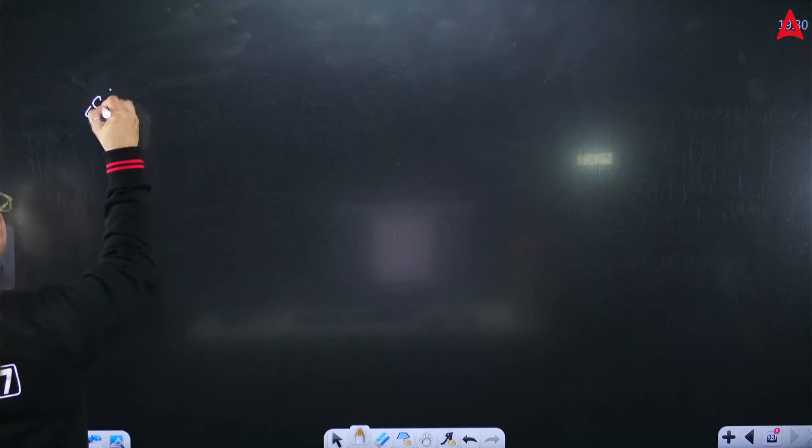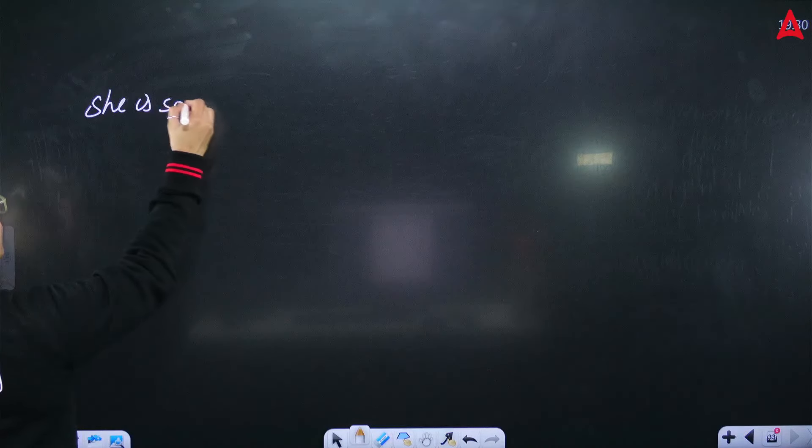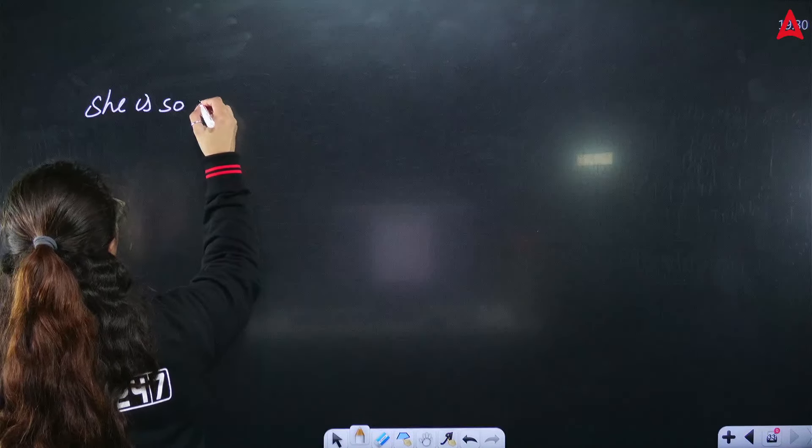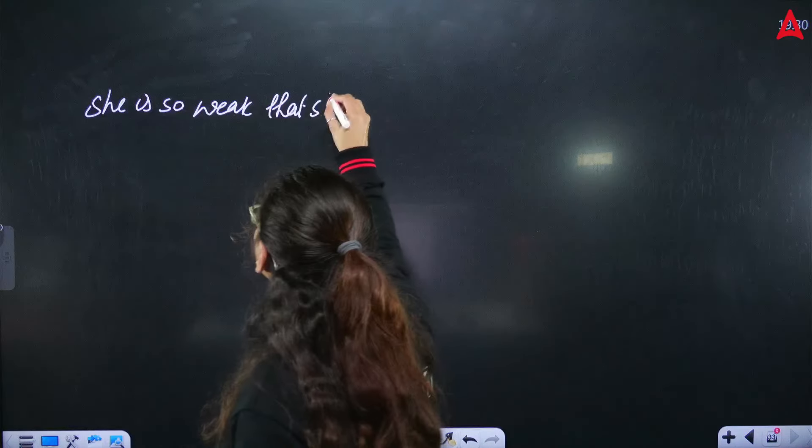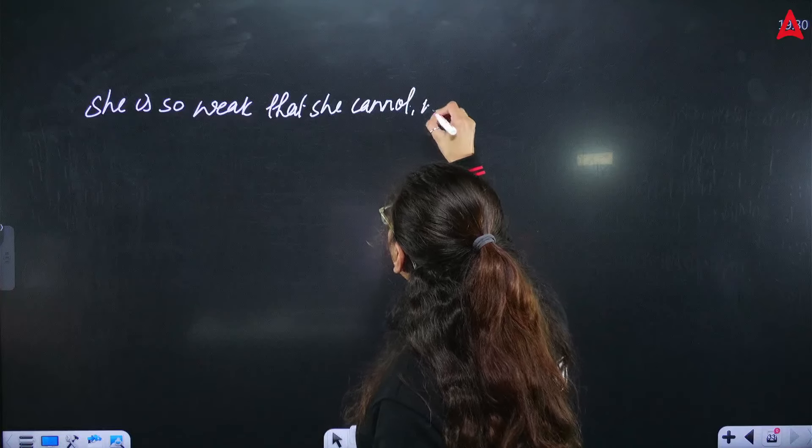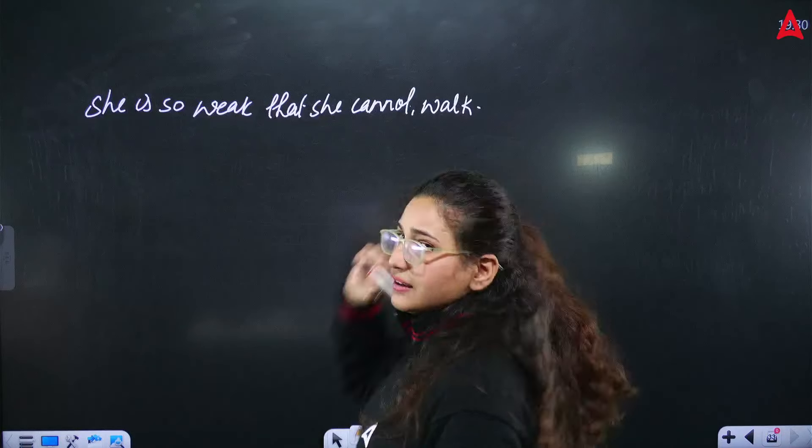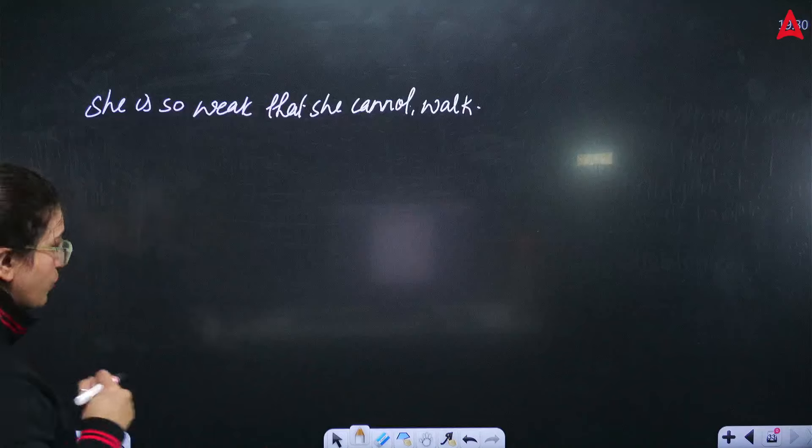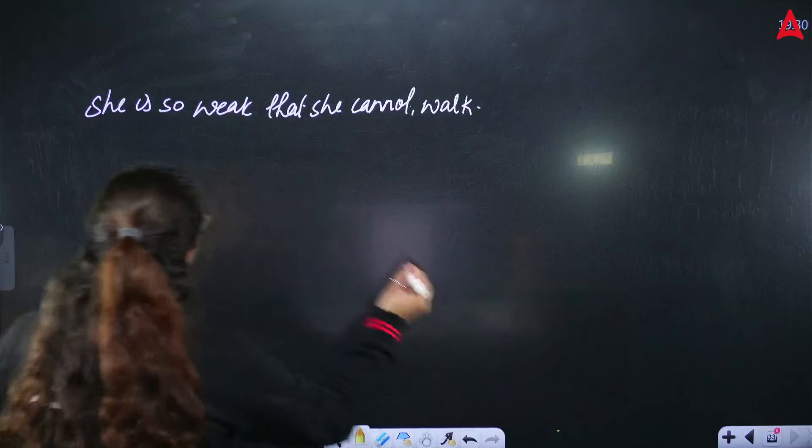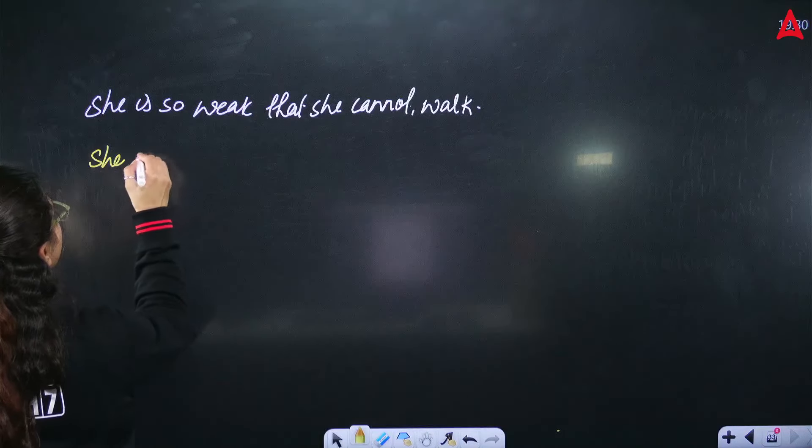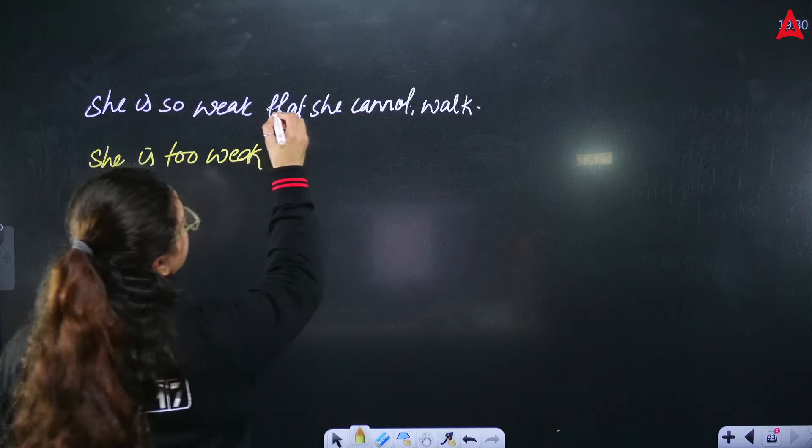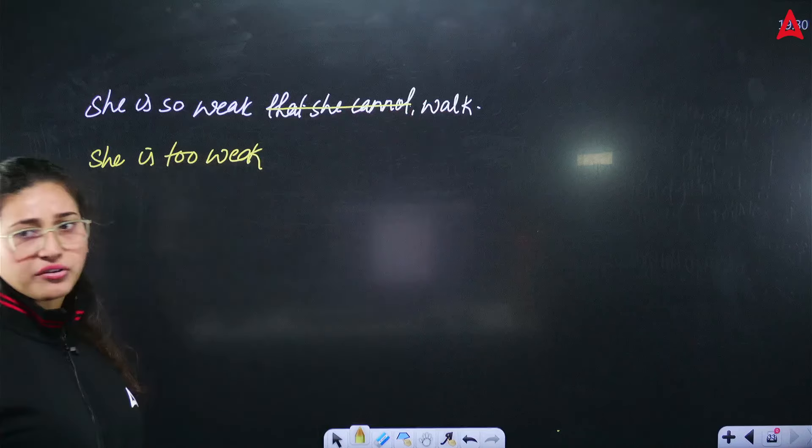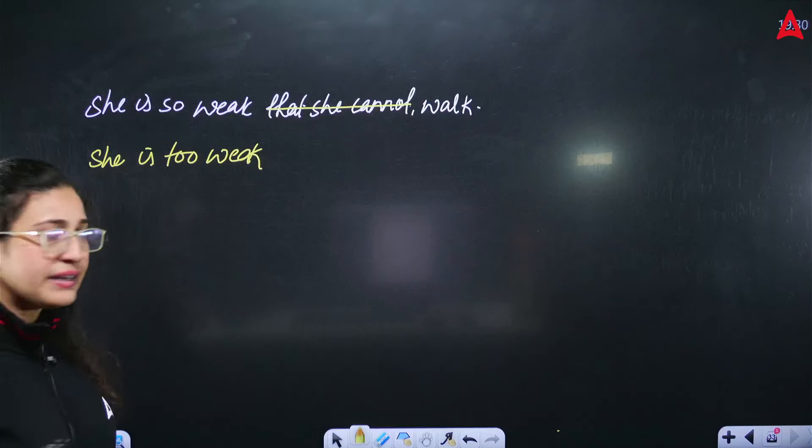For example, I said, she is so weak that she cannot walk, right? She is so weak that she cannot walk. Now if I convert this to too, what will happen? I said she is so. I will write on the board, too weak. Now I cannot write all this, that she cannot, I cannot write this.